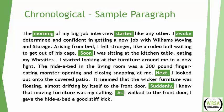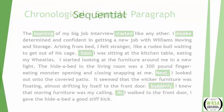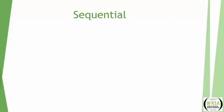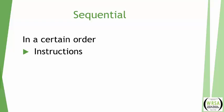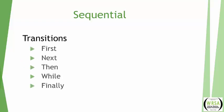Another format is what we call sequential. It's so closely related to chronological they're almost twins, but not quite. Sequential also tells things in time order, but it's more used for giving instructions or describing a process. Many of the words are the same — first, next, then, while, finally — but if I show you an example, you'll see the slight difference between a sequential and a chronological paragraph.